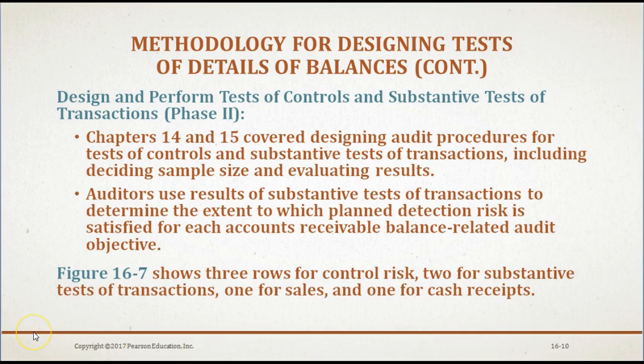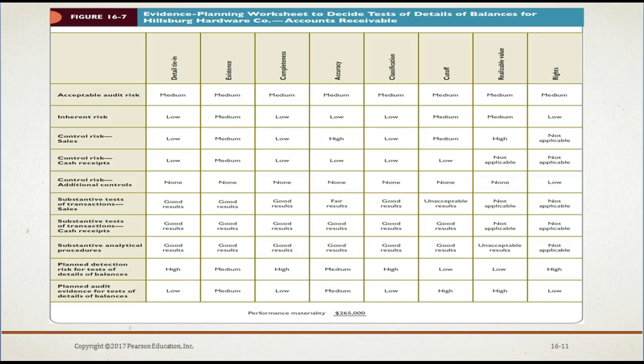Chapters 14 and 15 covered designing audit procedures for the test of controls and substantive test of transactions, including deciding sample size and evaluating results. The auditors use the results from the substantive test of transactions to determine the extent to which planned detection risk is satisfied for each accounts receivable balance-related audit objective. Figure 16-7 is an example of an evidence planning worksheet used to decide tests of details of balances for our example company, Hillsburg Hardware. You can find Figure 16-7 on page 544 of your textbook.